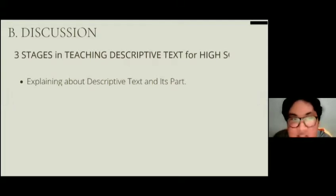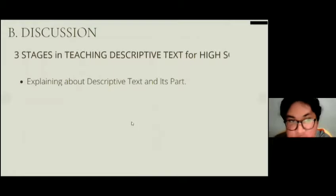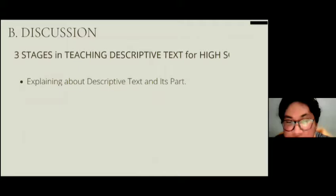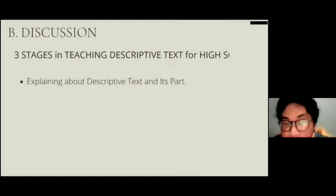We are now entering the discussion session. In the discussion, there are three stages in teaching descriptive text for high school students. Descriptive text is one of the genres stated in the syllabus for senior high school grade 10, under basic competency 7. The syllabus states that students have to learn about descriptive text about people, tourism places, and historical buildings.